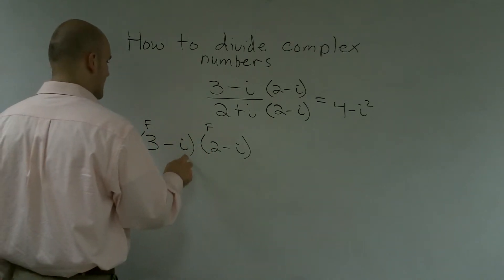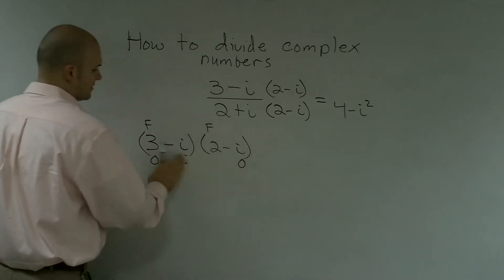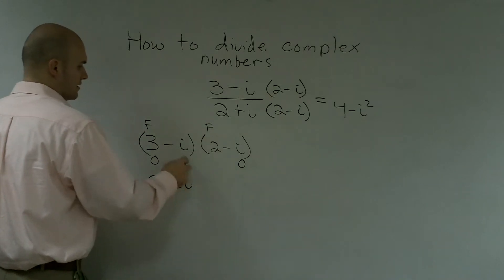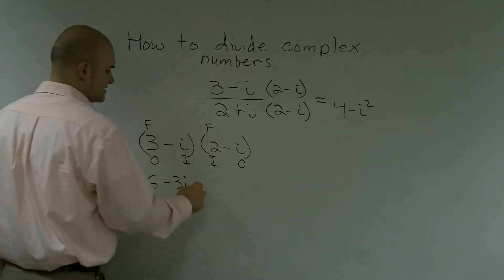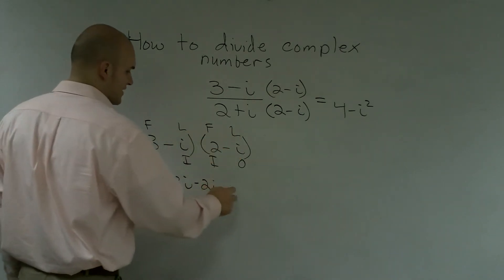Then we'll do the outer. 3 times negative i is negative 3i. Then we'll do the inner. 2 times negative i is negative 2i. And then we'll do the last. Negative i times negative i is a positive i squared.